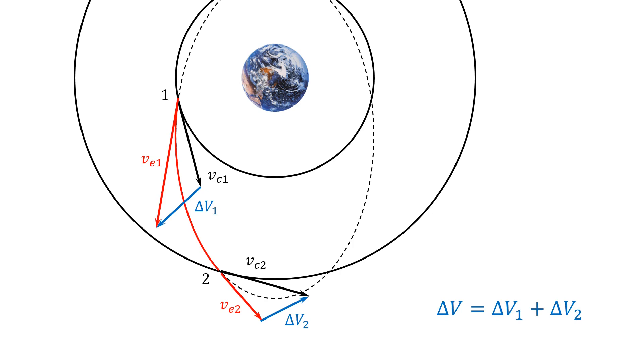Let's analyze these delta Vs one by one. At point 1, the spacecraft needs to speed up to match its velocity with the orbital velocity at that point, which can be easily found using the vis-a-viva equation.